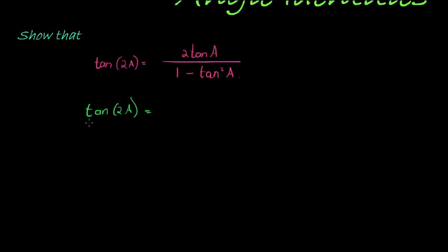We know that tan is sine over cos. So tan of an angle is equal to sine of that angle, that angle is just 2A, over cos of that angle. And cos of that angle is also 2A.